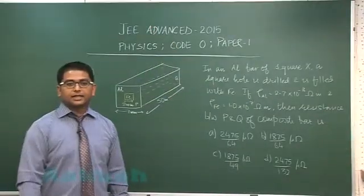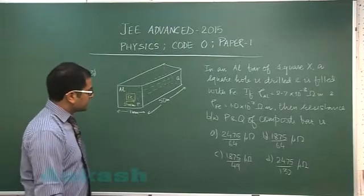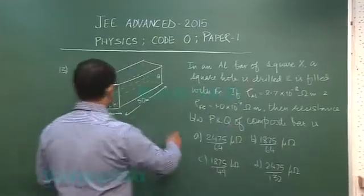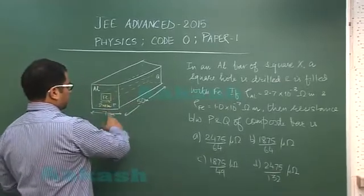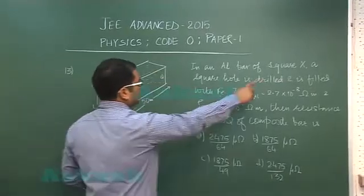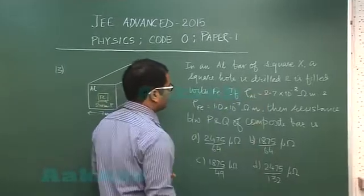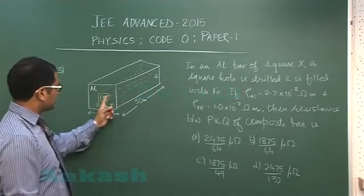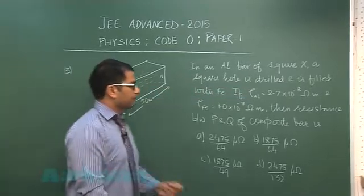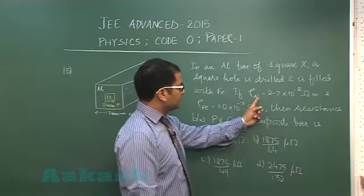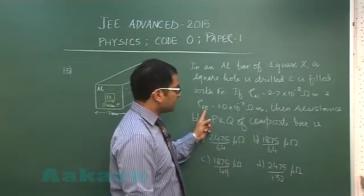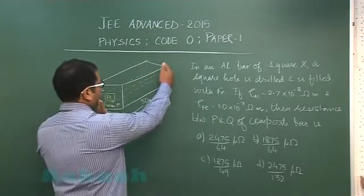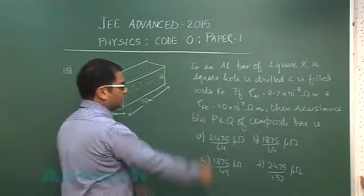Question number 13 is a simple question from current electricity. It says in an aluminum bar of square cross section 7x7 mm, a square hole is drilled and is filled with iron, which is very distinctly shown. The cross section of this is 4 mm square. Resistivity of aluminum is given, resistivity of iron is given, and we need to calculate resistance between P and Q, this face and this face of composite bar.